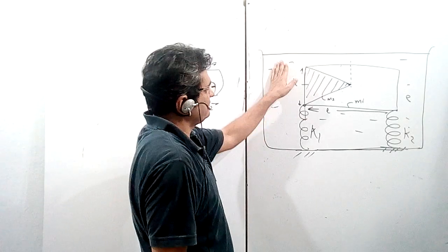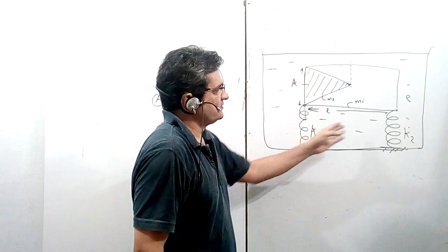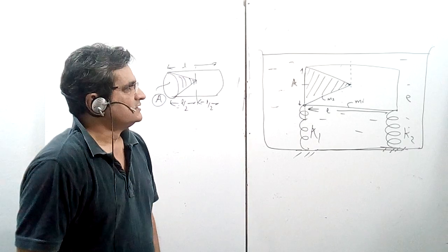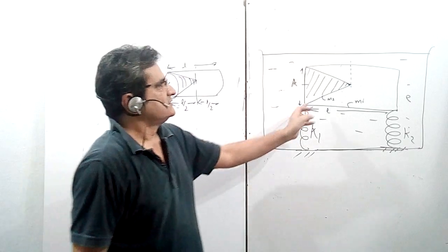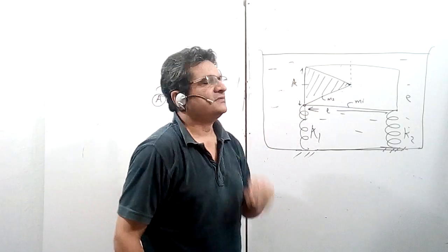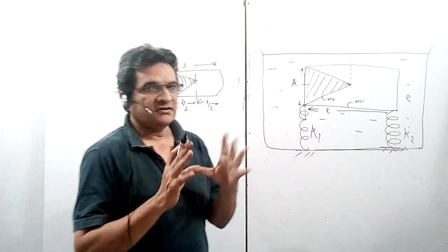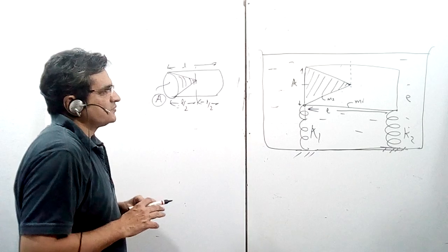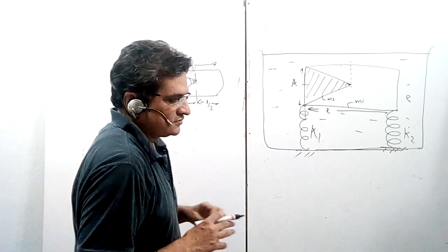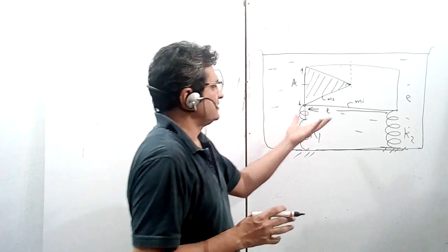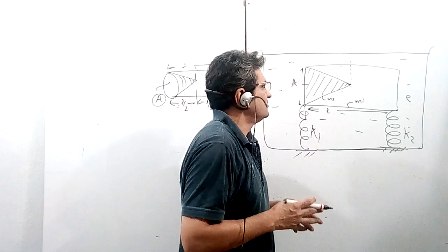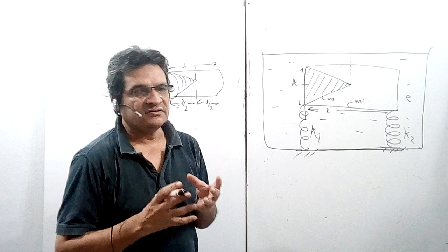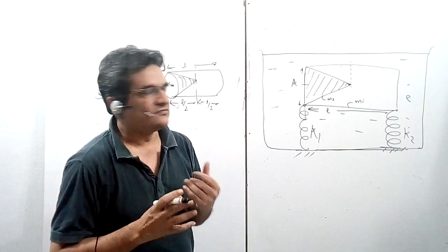We have to find the ratio of the two spring constants, k1 upon k2, such that the system remains horizontal. This problem is essentially based entirely on the concept of center of buoyancy.